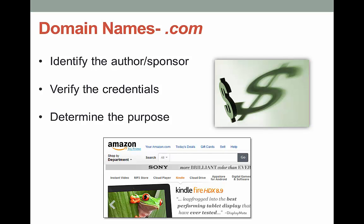Not all information on the internet is created equal. Sometimes it can be hard to tell the good from the less than good. But there are some clues that you can use to figure out more about the website. We'll focus on domain names — these are at the end of a website: the .com, the .edu, and so on. What do these really mean?